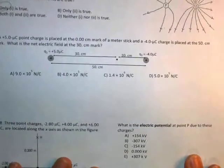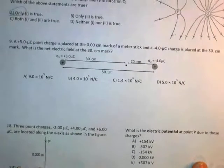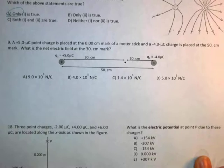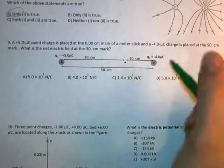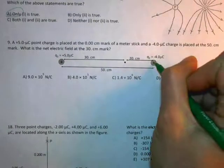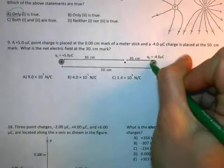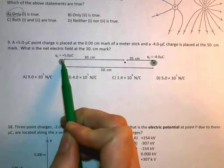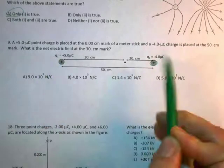All right, next is problem nine. Another electric field question. So I am, and I don't know if you noticed this, but this right here should be a minus, it shouldn't be a plus. I have a positive five microcoulomb charge on the left and a negative four microcoulomb charge on the right.